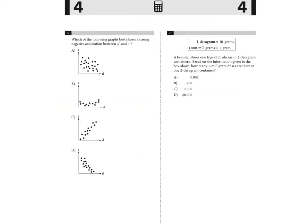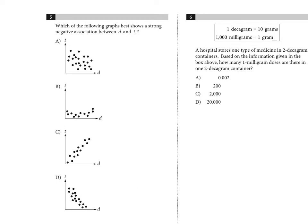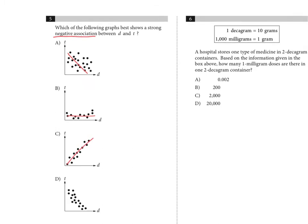Number five: which graph best shows a strong negative association between d and t? A negative association means a negative slope. Choice A shows a negative slope but it's too dispersed. Choice B is flat. Choice C is positive. Choice D is clearly a strong negative slope with points packed tightly together — that's the answer.